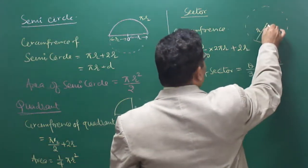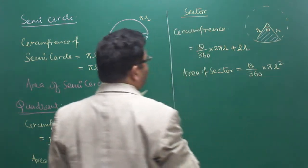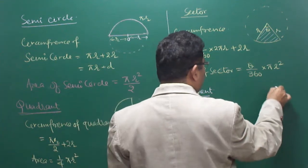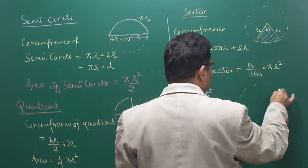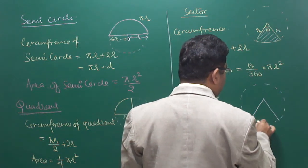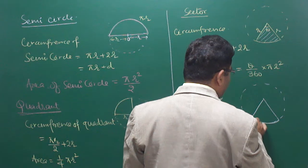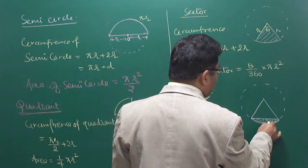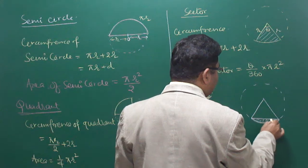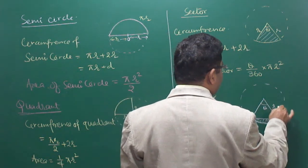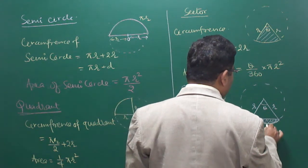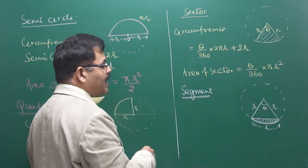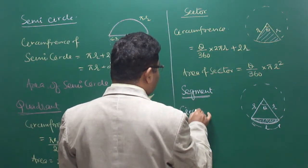The sector means this complete region. Apart from the sector, there can be a segment as well. Suppose this is a circle — this is a chord, and if I join this, then that will form a triangle. This portion is called the segment. We need to calculate the area or circumference of the segment, where this angle is theta, this is r, and this is called the length L.